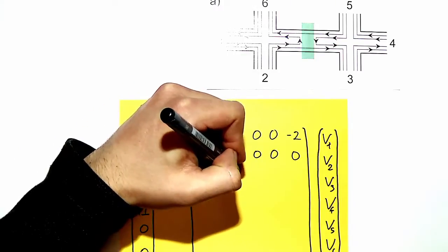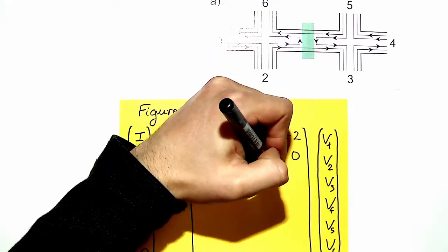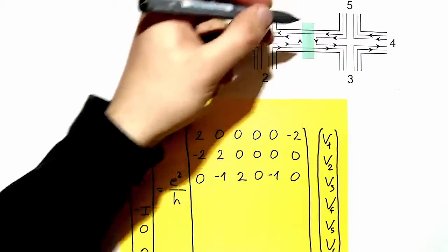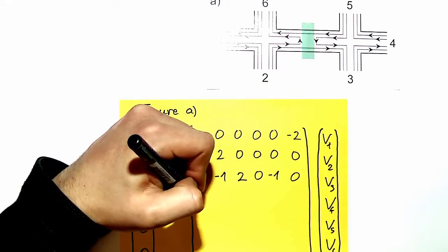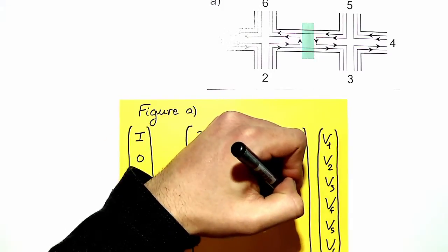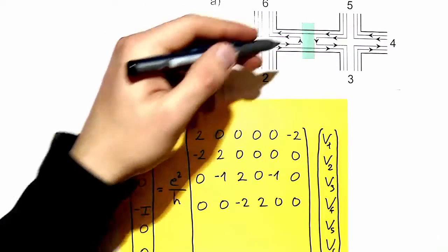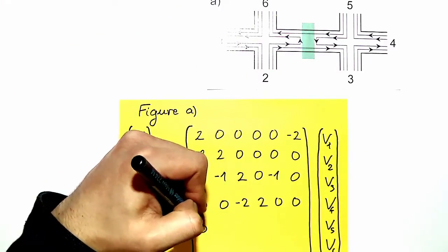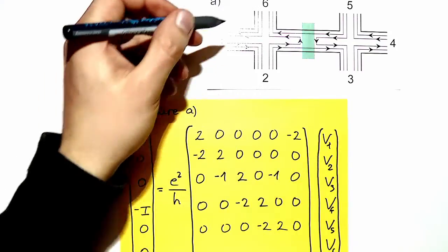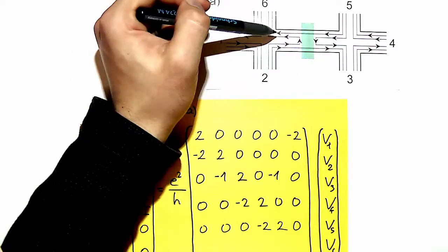For contact 3 the matrix entries are: minus 1, 2, minus 1, 2, and from 5 also a mode incoming. At contact 4 we have 2 incoming and 2 leaving. At contact 5 it is similar to 4. And as said before, we have one mode transmitted from 2 to 6, also one from 5, and 2 leaving.